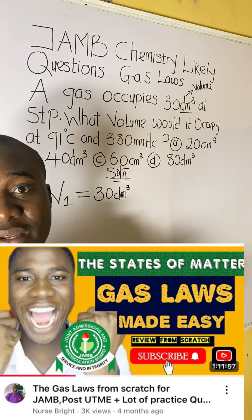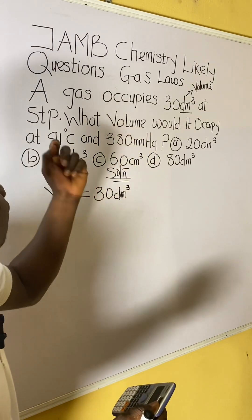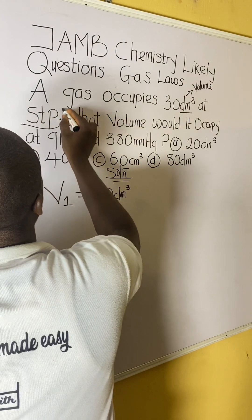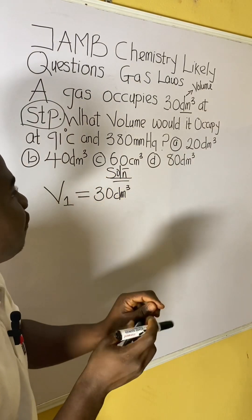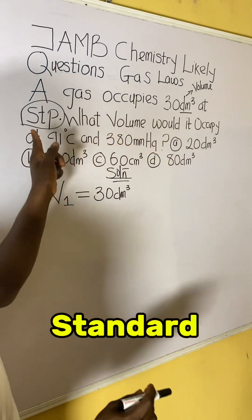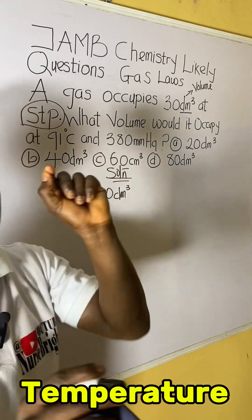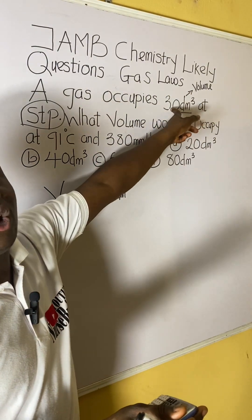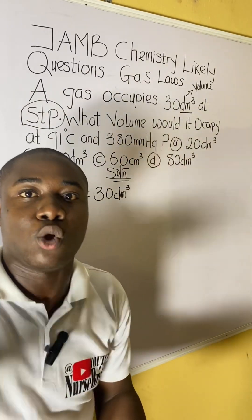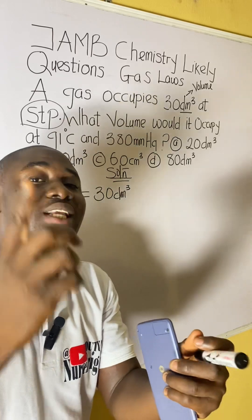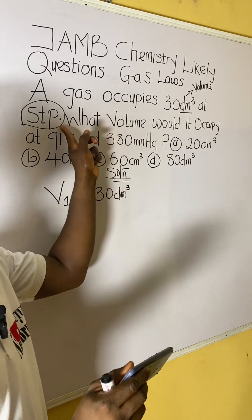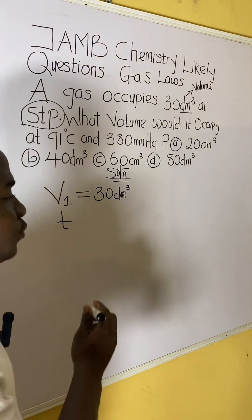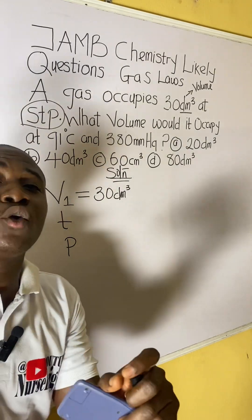This is also very important: they say the gas occupies this volume at STP. The word STP is extremely important. STP stands for Standard Temperature and Pressure — S is standard, T is temperature, P is pressure. So the gas occupies 30 dm³ at standard temperature and pressure. As a student, you must know the values allocated to standard temperature and standard pressure.